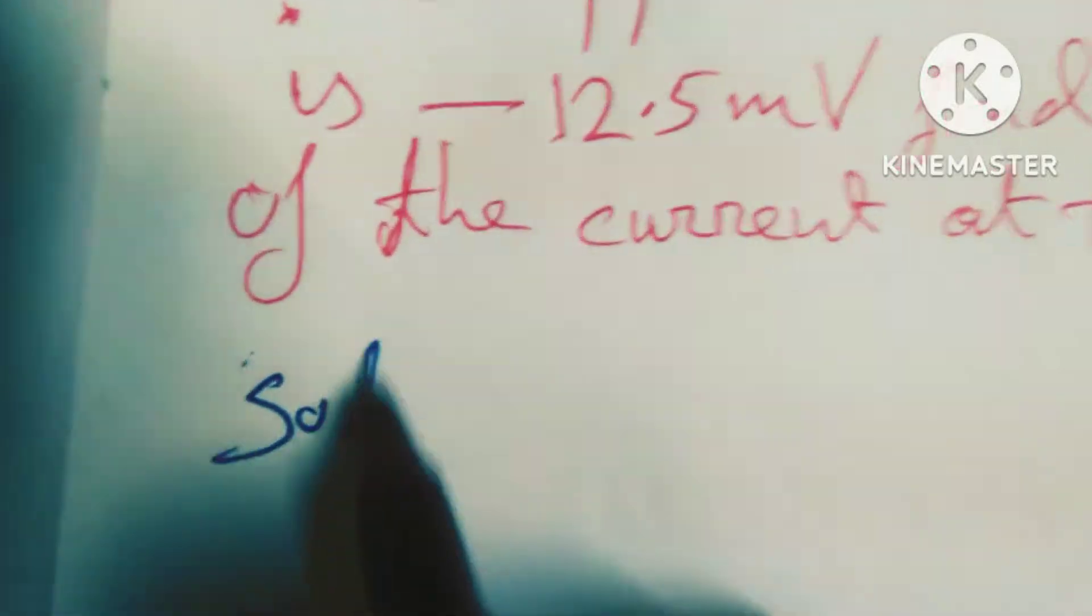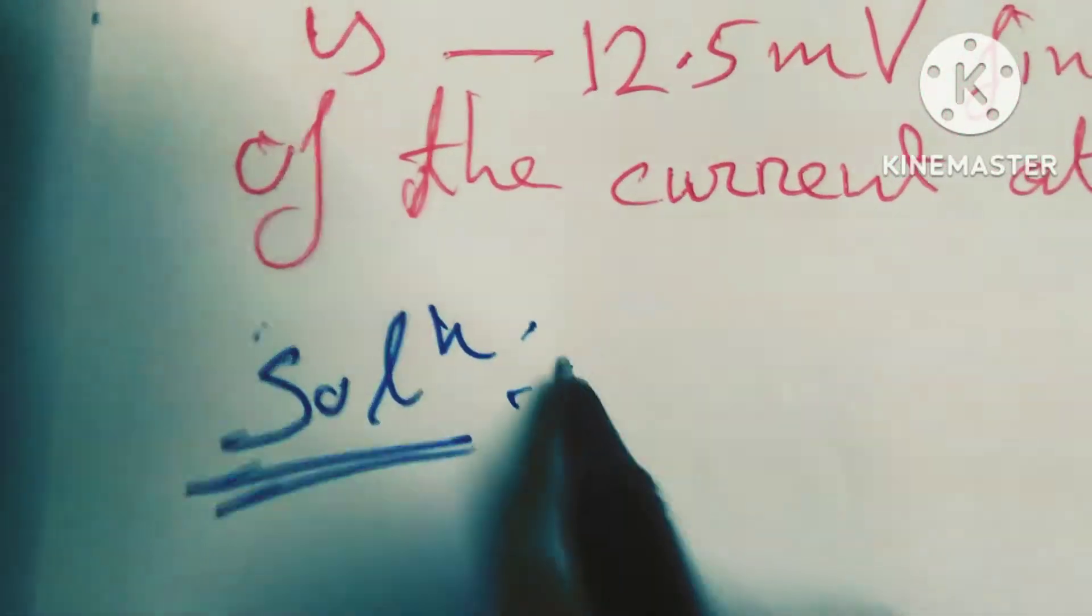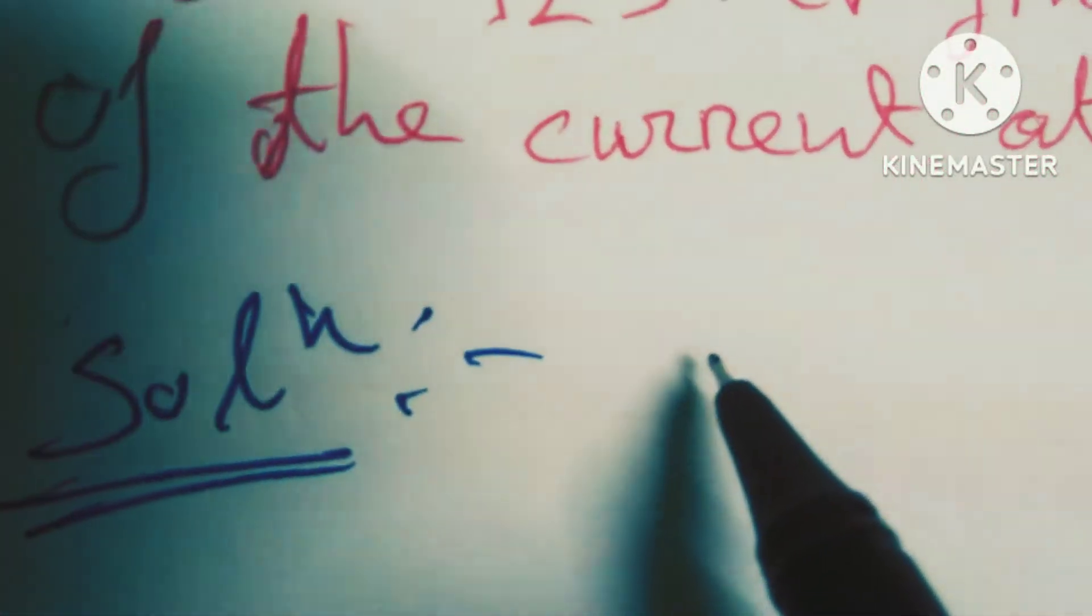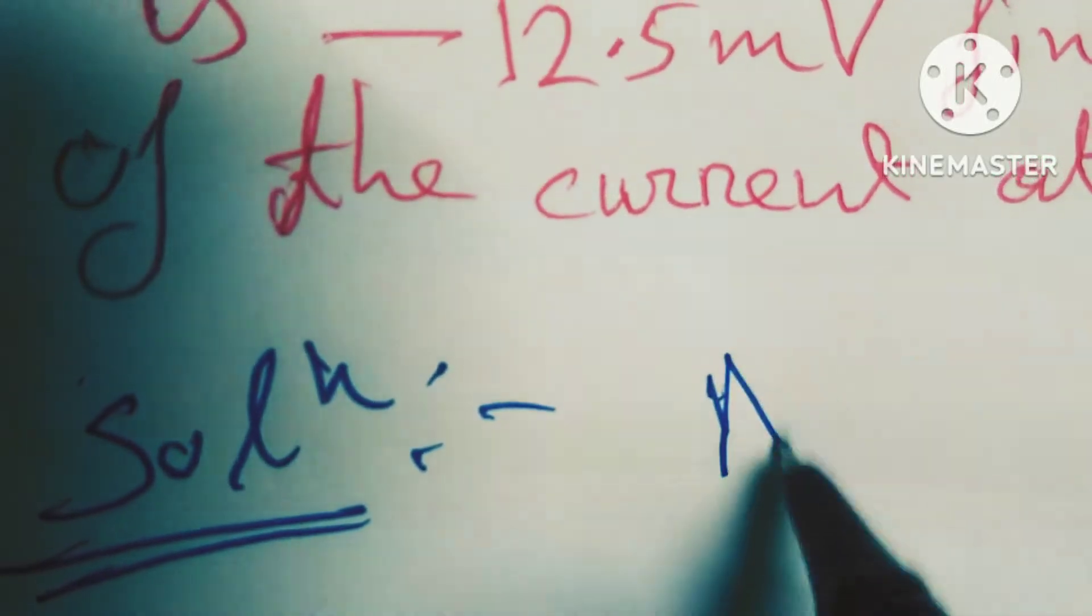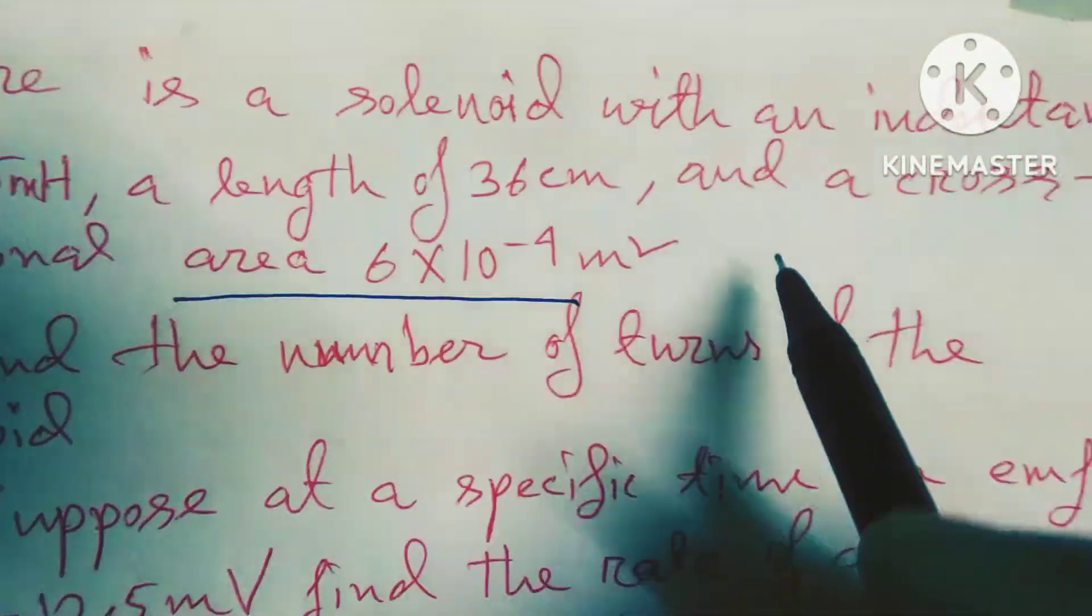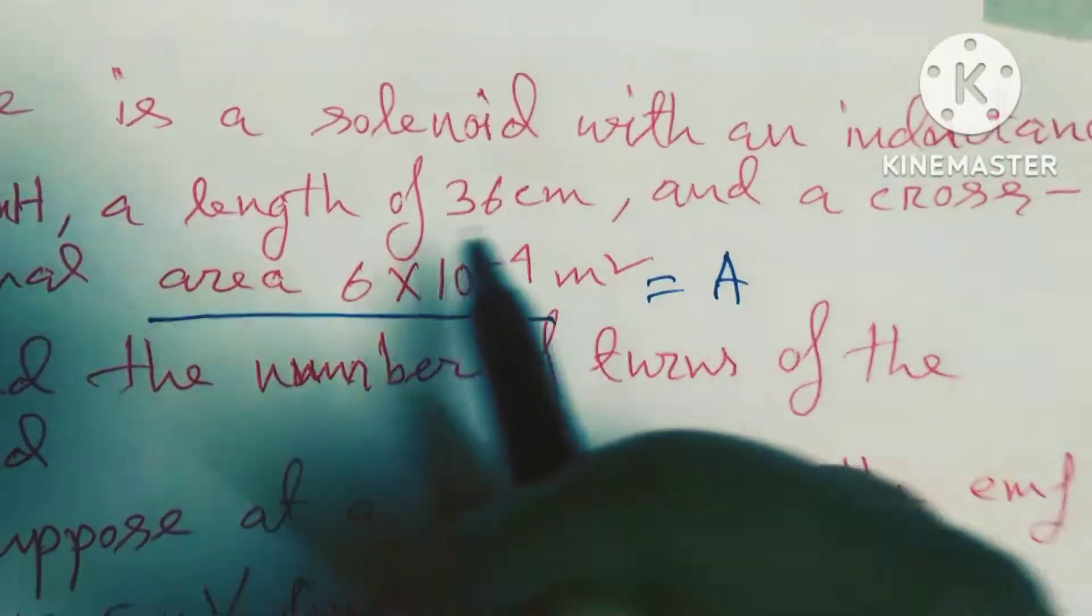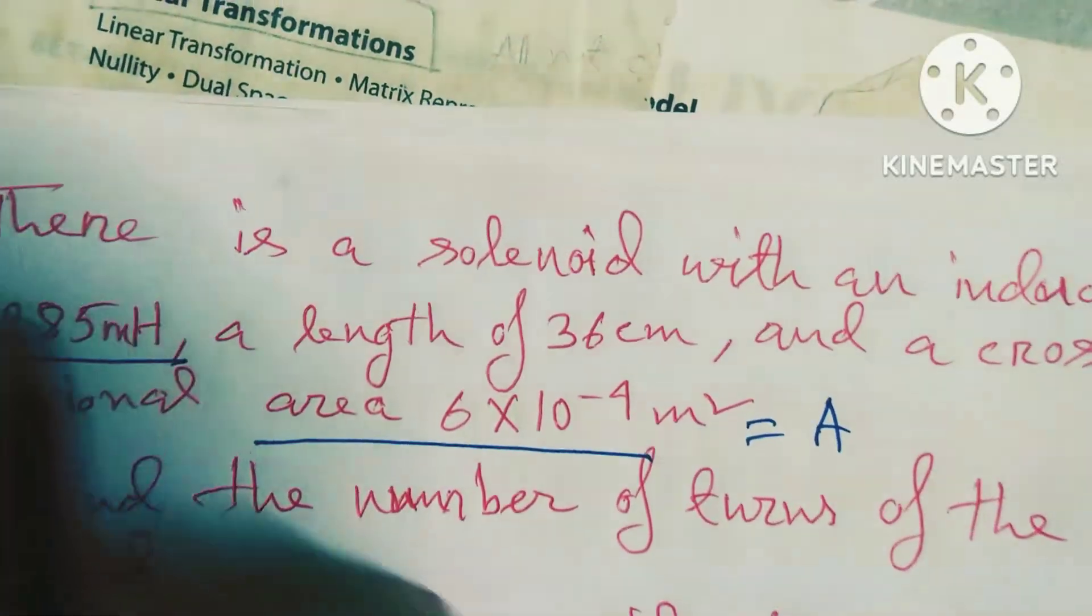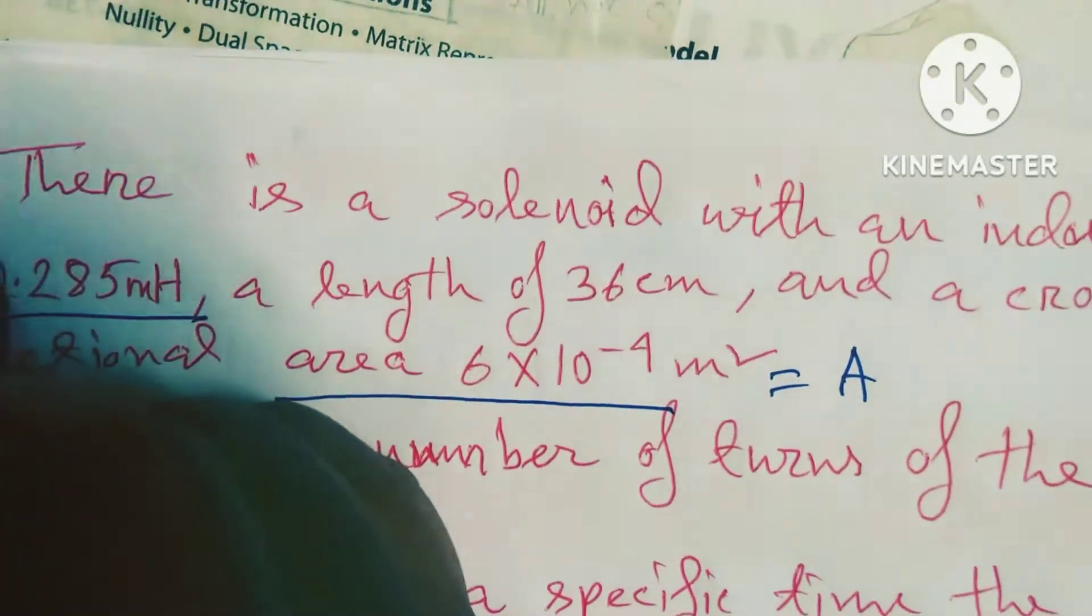So friends, now let's start the solution. I have to find out N. You see that area is given, this is called A, and self-inductance is given, this is L, and length is also given.